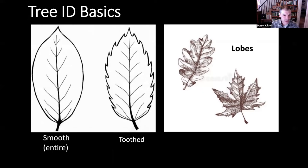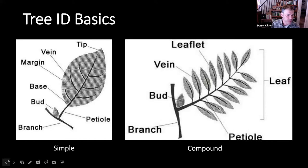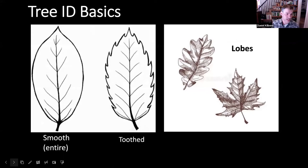Some common parts on the leaves: leaves have veins, so they have different venation patterns. On the example on the left, that simple leaf has a mid vein with other veins radiating off. The edges of the leaves have different characteristics as well. Some are smooth, which is also called entire. Some might be wavy. Some have teeth — these little jagged edges. Or they might have lobes, which are really deep valleys or sinuses along the edge of the leaf. This oak leaf and the silver maple leaf on the right are good examples of these deep cuts, these lobes.